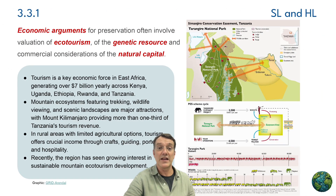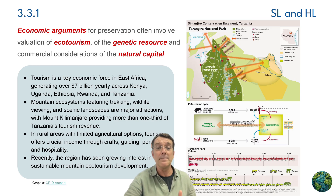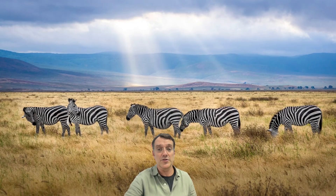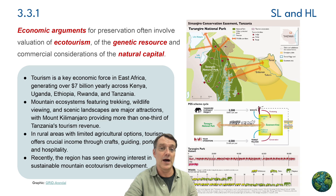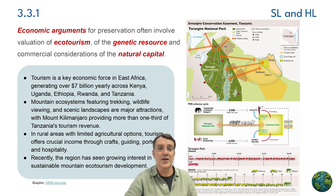Similarly, tourism offers compelling economic reasons for conservation in East Africa. The region generates over $7 billion a year from tourism across countries like Kenya, Tanzania, and Uganda. Mountain ecosystems featuring trekking, wildlife viewing, and scenic landscapes are major attractions, with Mount Kilimanjaro alone providing more than a third of Tanzania's tourism revenue. In rural areas with limited agricultural options, conservation-based tourism offers an important income source through crafts, guiding, and employment in the hospitality industry. This shows how protecting natural environments can directly benefit local economies and communities.